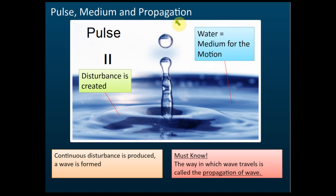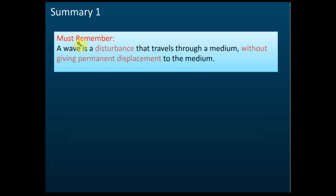In summary, a wave is a disturbance that travels through a medium without giving permanent displacement to the medium. This is the definition you need to know.